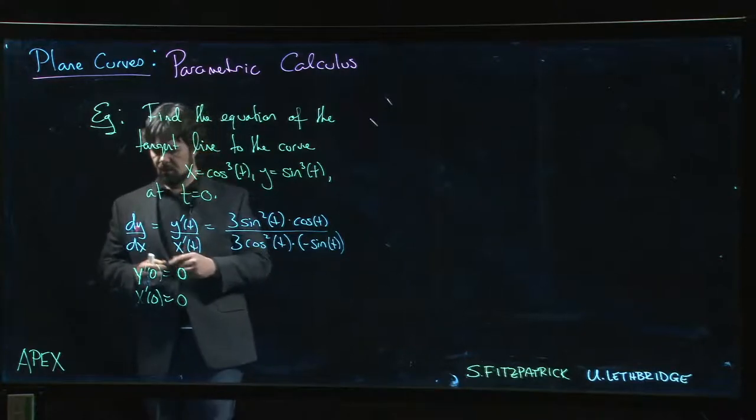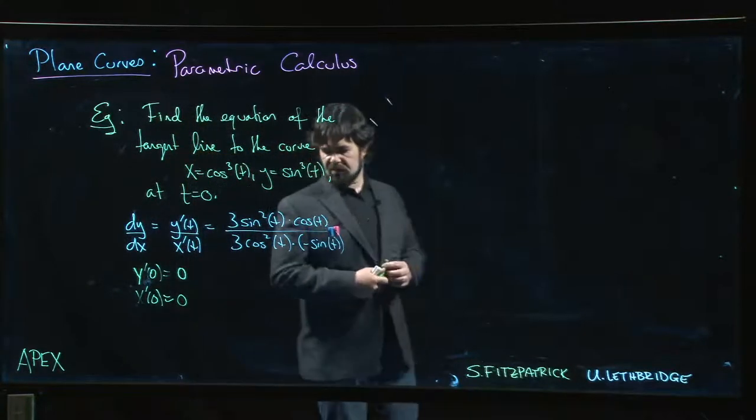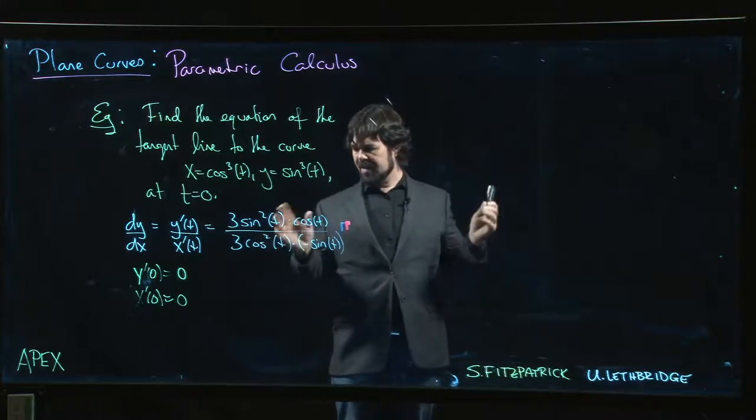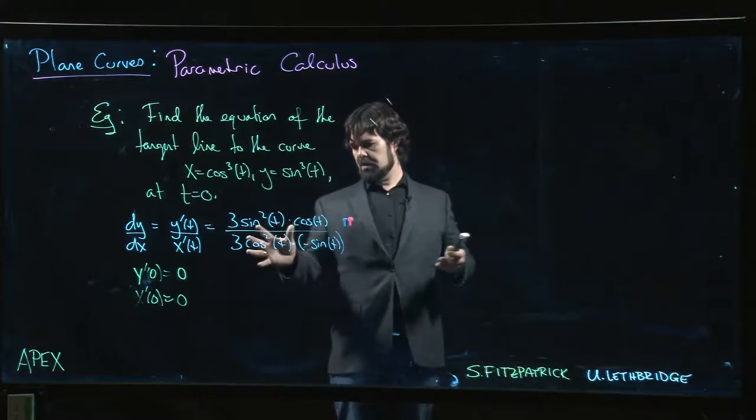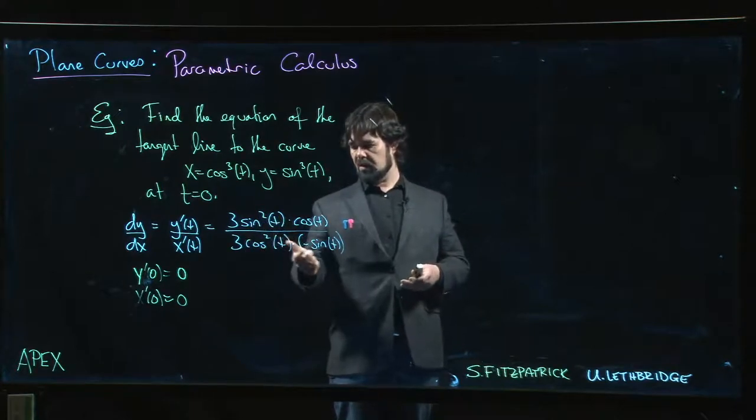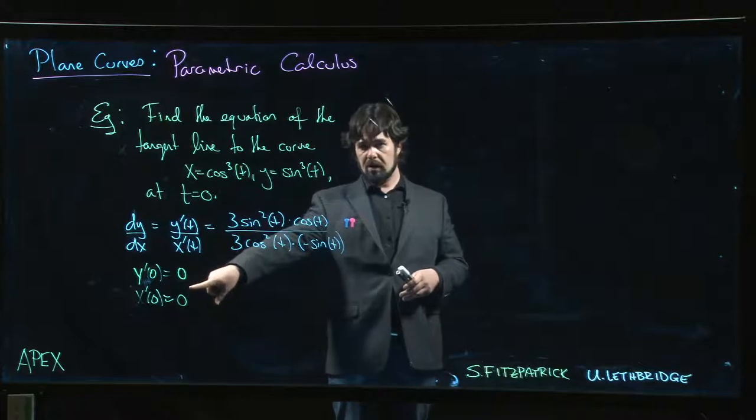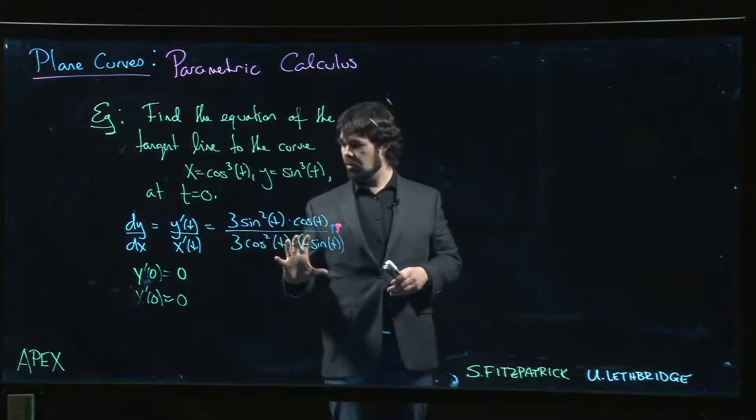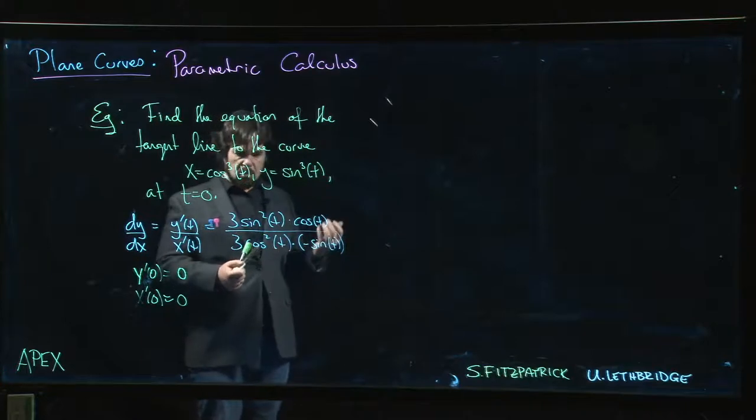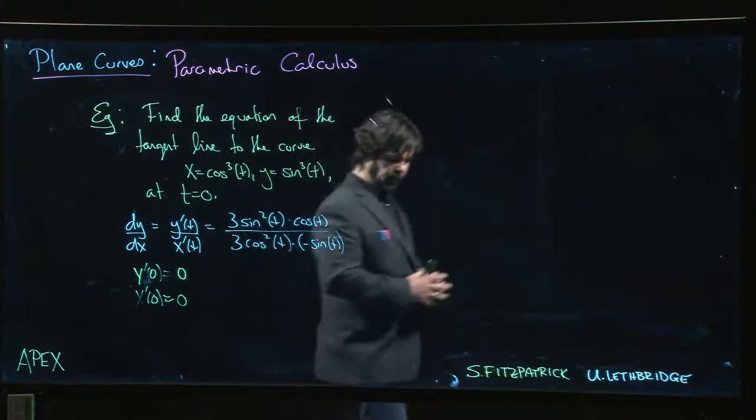Well, it's zero over zero, but you can see there's some simplification that can happen. You have to be a little careful—if you simplify, maybe you're losing some information. You're canceling things that are zero. This is zero over zero, an indeterminate form.